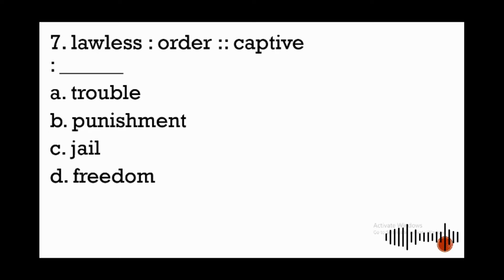Number seven: lawless is to order as captive is to blank. Lawless is to lack order, therefore the given words are opposite in meaning. They are antonyms. That's the relationship. Now apply the same relationship to the other pair of words.